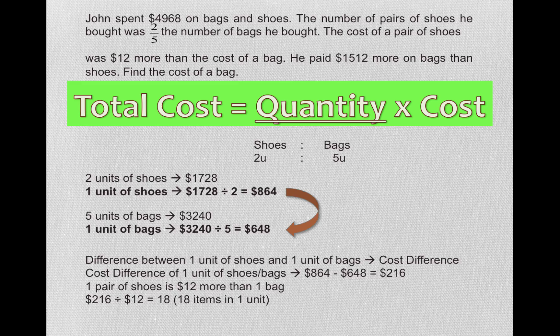If there are 18 items in one unit, what is one unit of a bag? We were told it's a total cost of $648. So what is the cost of one bag? $648 divided by 18, which gives us $36. This is the cost of a bag.